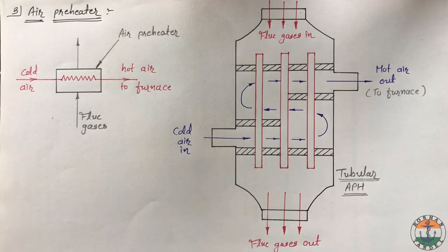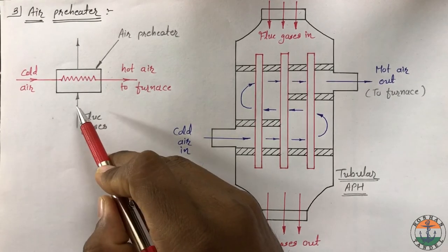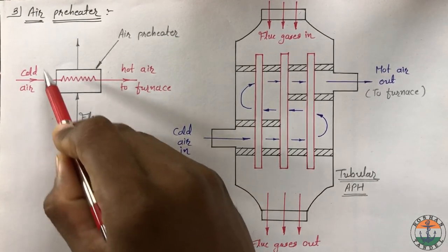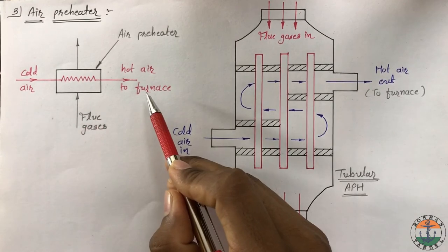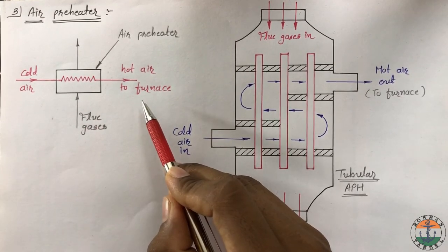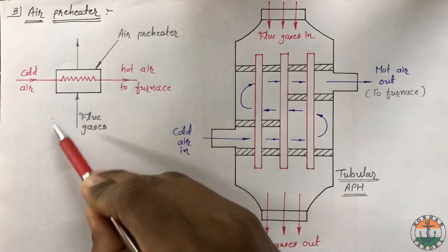The third boiler accessory is air preheater. In air preheater, the surrounding air which is going to the furnace for the burning of fuel is heated with the help of flue gases.